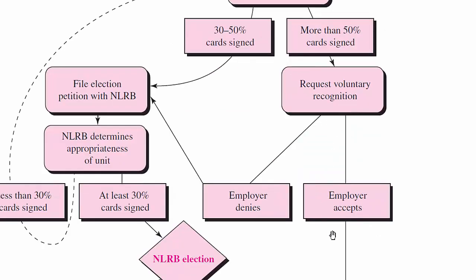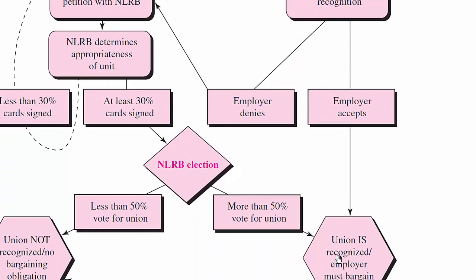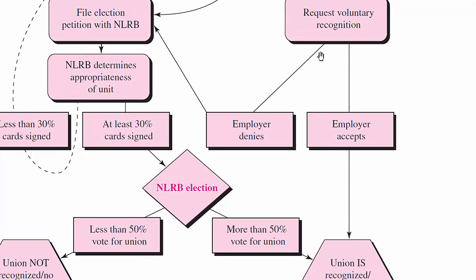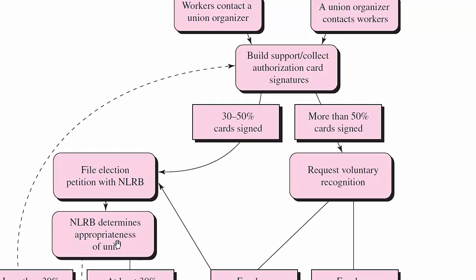If the employer accepts the request for recognition, they would begin to bargain with the union. If the employer denies that voluntary recognition request, then the employees must still file a petition with the National Labor Relations Board. Authorization cards are used as official evidence to the NLRB and to employers that employees are interested in union representation. If less than 30% of the cards are signed, the workers cannot file a petition and cannot get an election.